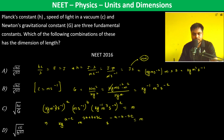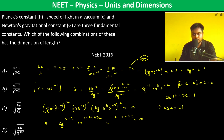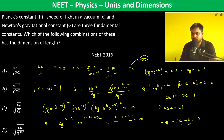Therefore a minus c equals 0, so a equals c. Then 2a plus b plus 3c equals 1, which becomes 5a plus b equals 1. And minus a minus b minus 2c equals 0, which with a equals c substituted gives minus 3a minus b equals 0, so b equals minus 3a.